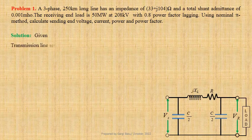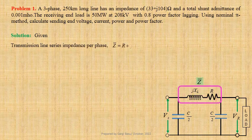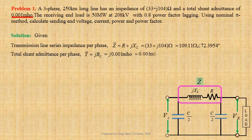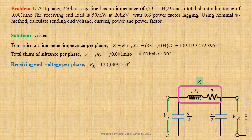Given transmission line series impedance per phase, Z equals R + jXL equals 33 + j104 ohms. This may be written in polar form as 109.11 ohms ∠ 72.3954°. Total shunt admittance per phase, Y equals jBC equals j × 0.001 mho, which may be written in polar form as 0.001 mho ∠ 90°. Taking receiving-end voltage per phase as reference, we can write Vr equals 120,089 volts ∠ 0°.